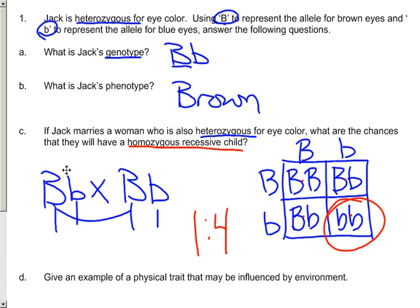An example of a physical trait that may be influenced by the environment would be somebody's size, perhaps their height, which is going to be affected by their diet, by how much they eat, whether they're taking their vitamins, whether they're eating healthfully or something like that.